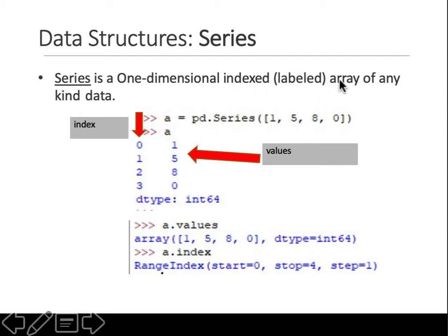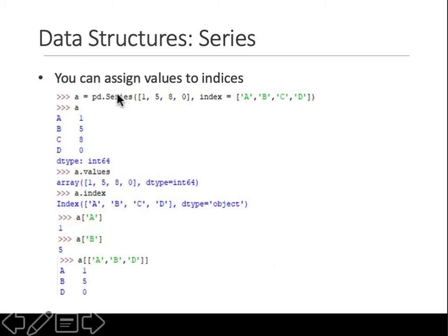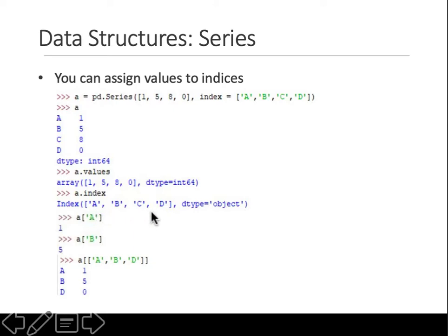When you have indices you can name them as well — you can assign labels to those indices. For example, when creating a Series you can specify that the indices are a, b, c, d. The values that were previously labeled 0, 1, 2, 3 are now replaced and labeled a, b, c, d. When you view the index it says a, b, c, d, and the data type of these labels is considered as objects.